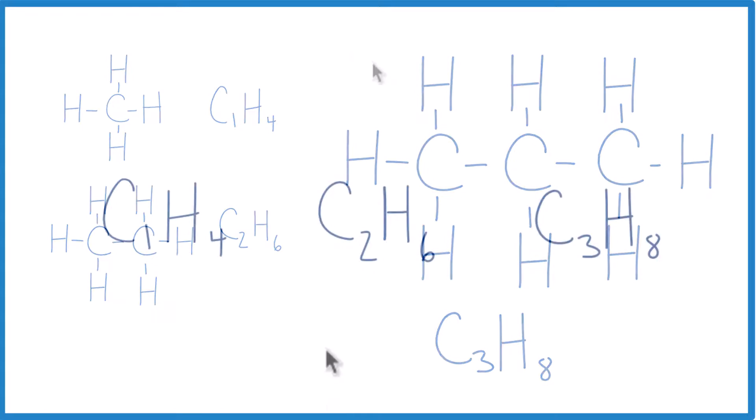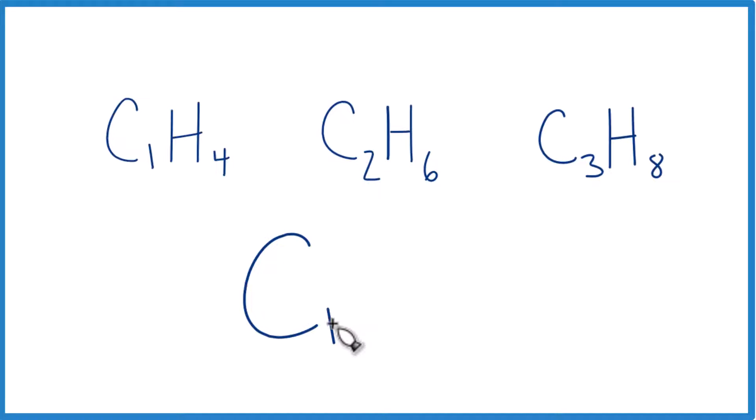Let's look at the formula now. So we're increasing by one carbon. So we're going to write carbon, and then we're going to put n. That'll be our number, one, two, or three.